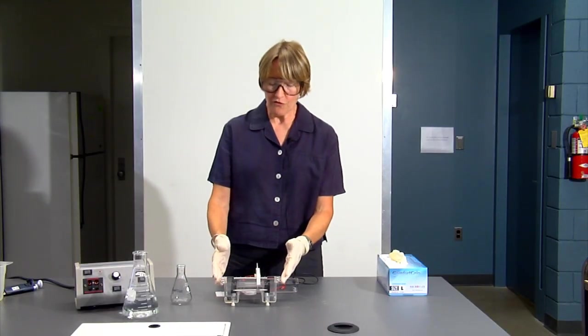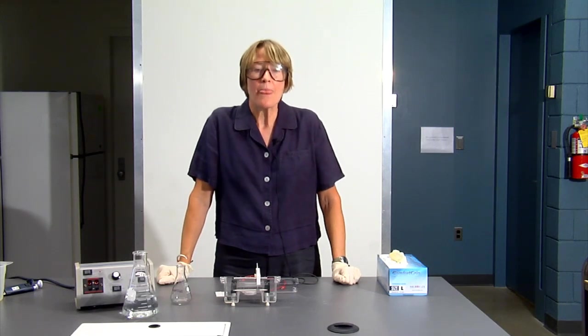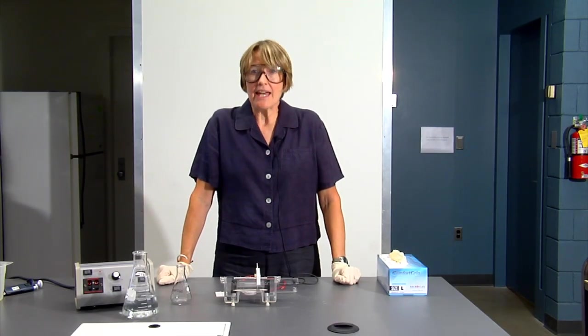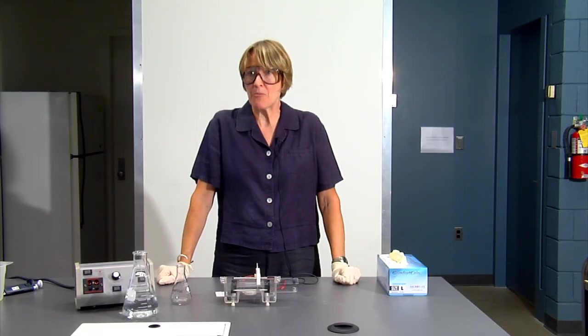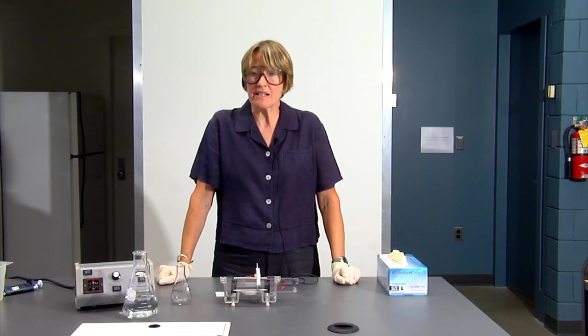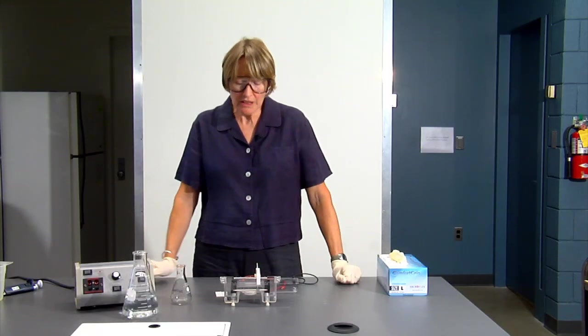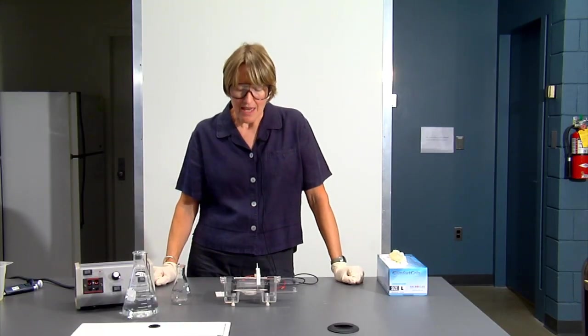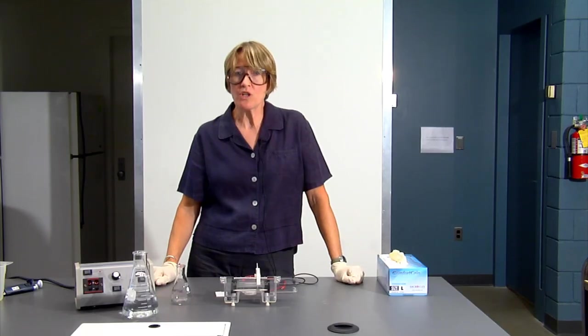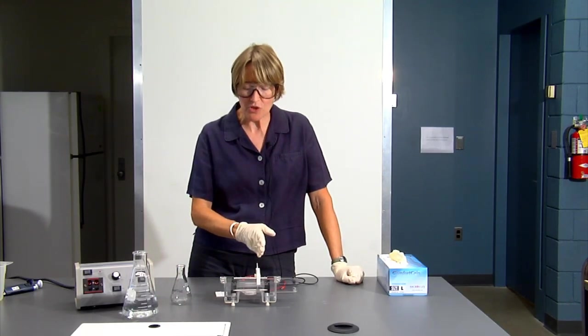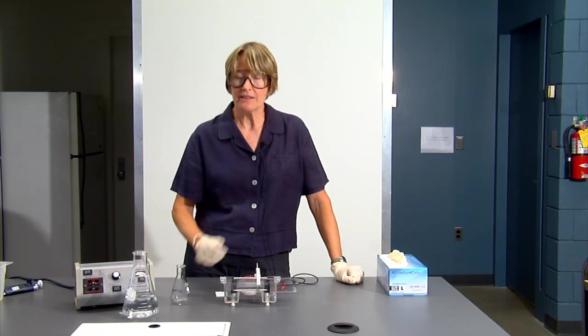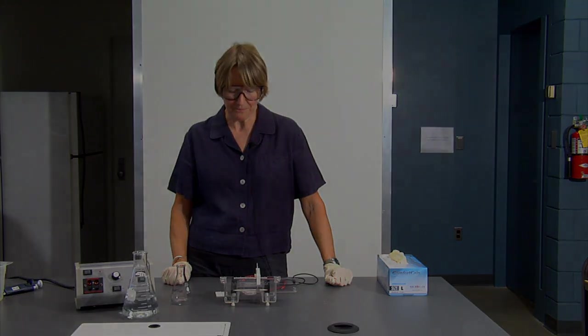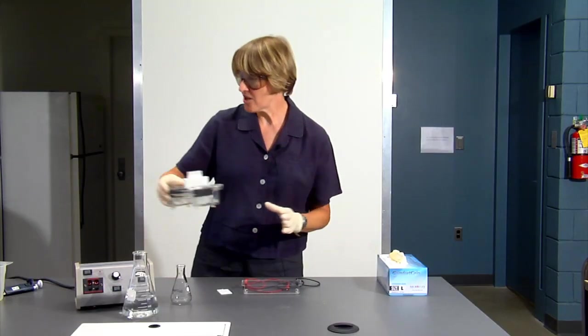While you're waiting for your gel to harden, you have about 20 minutes. You can make a gel map for your samples as described in your lab manual. You can also prepare your samples in the sample buffer. The sample buffer contains a dye, a tracking dye, which will allow you to track the DNA as it moves through the gel matrix. It also contains glycerol, which will make the sample heavy so that when we add the samples to the wells, the samples will sink to the bottom of the well underneath the aqueous buffer.